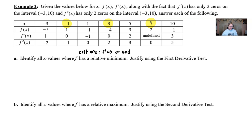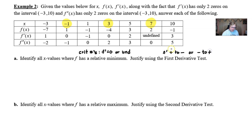Any time the derivative equals zero or is undefined, we've found our critical values. The critical numbers in this problem are negative 1, positive 3, and 7 — only those numbers have a chance at being our answer for part A. Now we look at what the first derivative test says: we're checking if f' changes from positive to negative (a max) or negative to positive (a min).